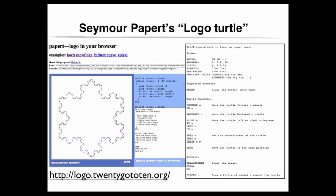For example, FWD N will move the turtle forward N pixels. Similarly, with the accessibility of microcomputers to the general public in the 1980s, schools were enthusiastic to use them for instructional purposes.